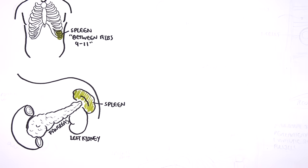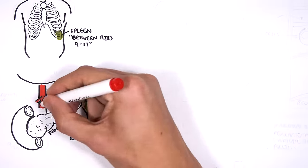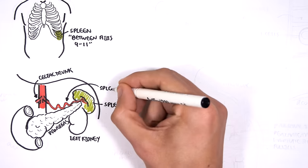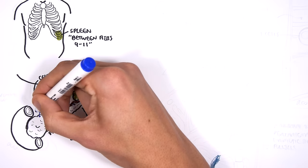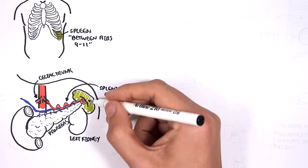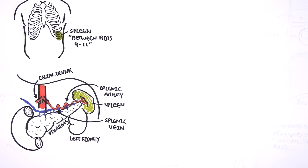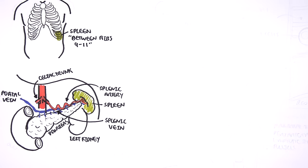The arterial supply of the spleen comes off the celiac trunk, which is off the descending aorta — specifically the splenic branch of the celiac trunk, which is a tortuous artery that supplies the spleen and part of the stomach. The drainage of the spleen is from the splenic vein, which also drains part of the pancreas, and then joins into the inferior mesenteric vein before joining with the superior mesenteric artery, which then forms the portal vein that goes into the liver.